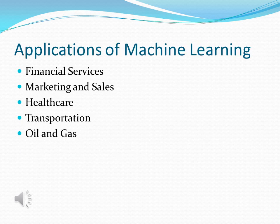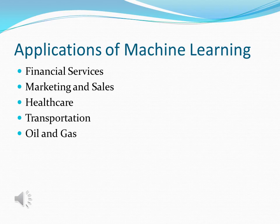The following are some of the applications of machine learning. The first one is financial services. Companies in the financial sector are able to identify key insights in financial data as well as prevent occurrences of financial fraud with the help of machine learning. The technology is also used to identify opportunities for investments and trade. The second one is marketing and sales. Companies are using machine learning to analyze the purchase history of their customers and make personalized product recommendations for their next purchase.